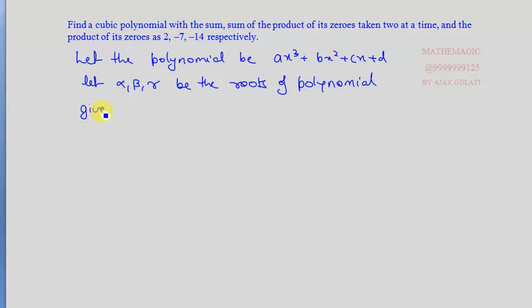Now given: α + β + γ, this is the sum of roots, equals 2, which is -b/a.